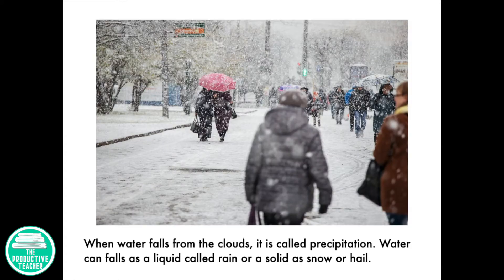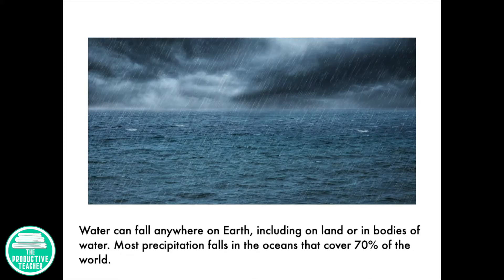When water falls from the clouds, it is called precipitation. Water can fall as a liquid, called rain, or a solid, as snow or hail. Water can fall anywhere on Earth, including on land or in bodies of water. Most precipitation falls in the oceans that cover 70% of the world.